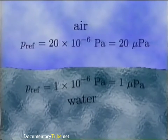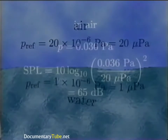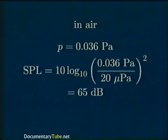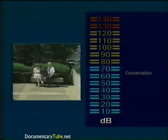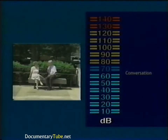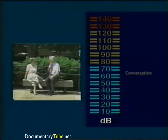In other words, 20 micropascals is the quietest audible sound at 1 kHz. For example, an acoustic pressure of 0.036 pascals in air corresponds to a sound pressure level of about 65 decibels — approximately the sound pressure level of normal conversation.